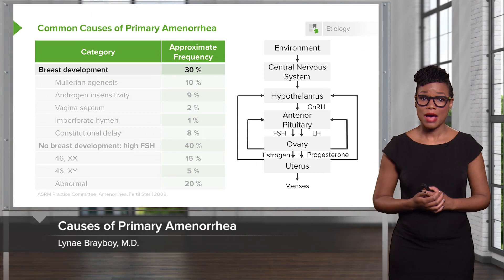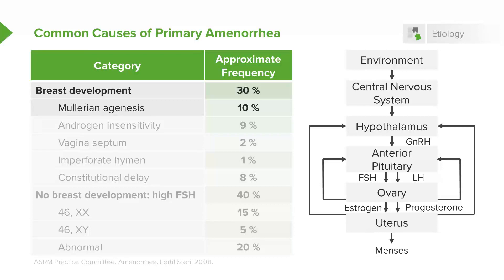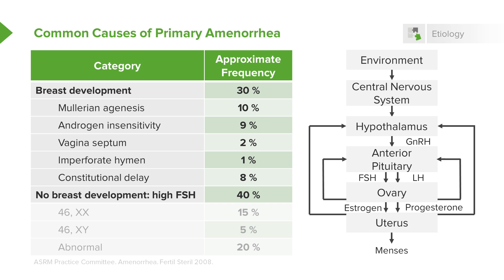Let's go over common causes of primary amenorrhea. If a patient has breast development, consider that the cause may be Mullerian agenesis — there is a separate lecture on Mullerian agenesis for more information. Androgen insensitivity can also present as primary amenorrhea, and there is another lecture on complete and partial androgen insensitivity. Women may also have anatomic factors that prevent menses, such as a vaginal septum, an imperforate hymen, or they may have constitutional delay.